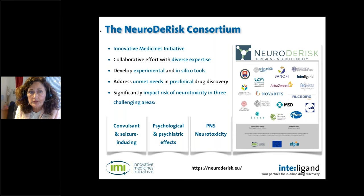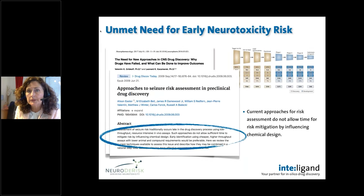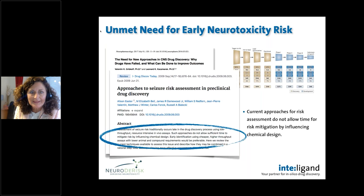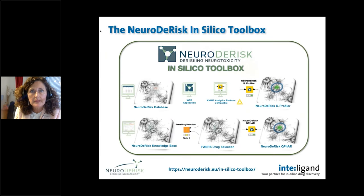Those three areas are convulsant and seizure-inducing adverse effects, psychological and psychiatric effects, and peripheral neurotoxicity. There is an unmet need for much earlier neurotoxicity risk assessment. Current approaches traditionally occur later in the drug discovery process, using low-throughput, resource-intensive in vivo assays. These assessments do not allow sufficient time to mitigate risk by influencing chemical design, which occurs much earlier in the process. So in this project, we developed the NeuroDeRisk in silico toolbox to specifically address that unmet need.